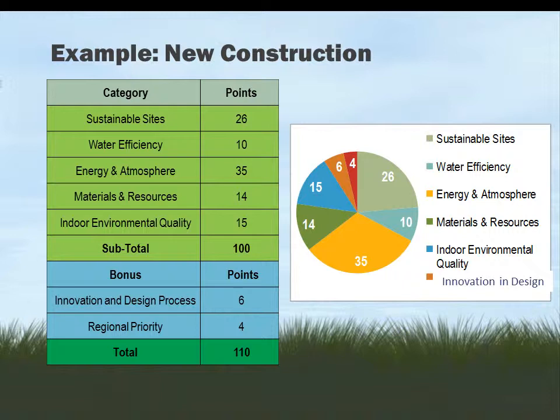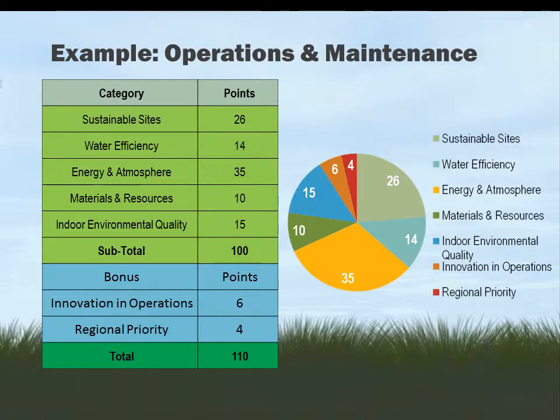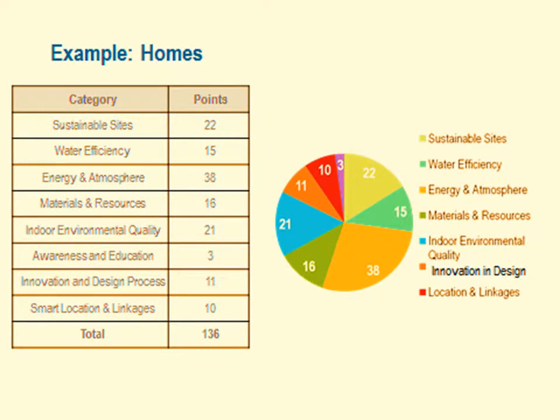Points are available in six categories: sustainable site planning, water efficiency, energy and atmosphere, materials and resources, indoor environmental quality, and innovation credits. Points are distributed a little differently depending on the type of rating you're looking for. For instance, one example is for new construction, another for operations and maintenance — same basic categories but slightly different. And then LEED for Homes has even different values with a different mix of concerns depending on the project.